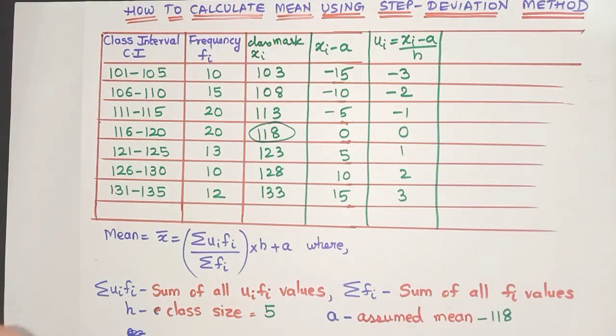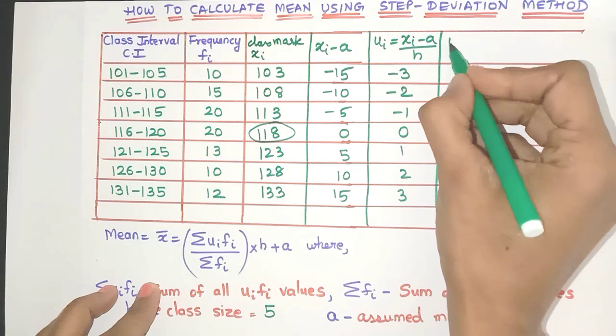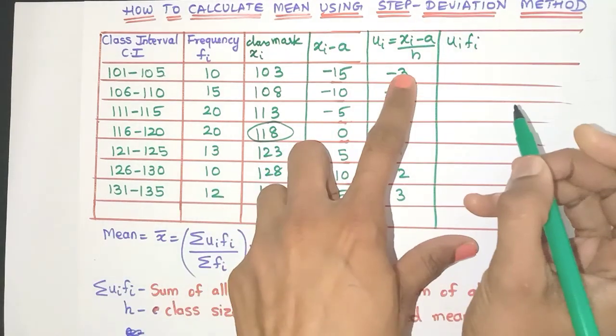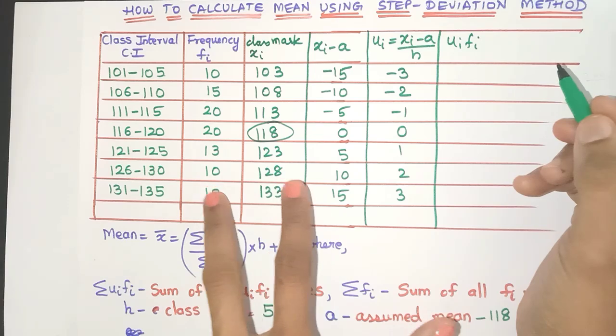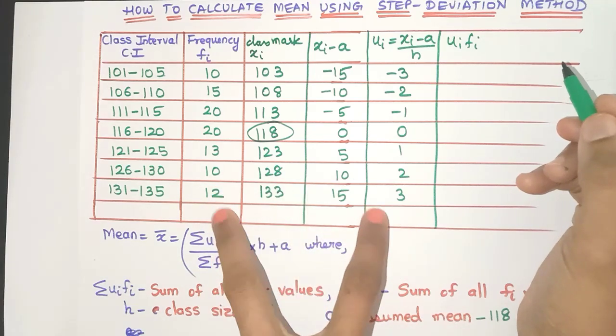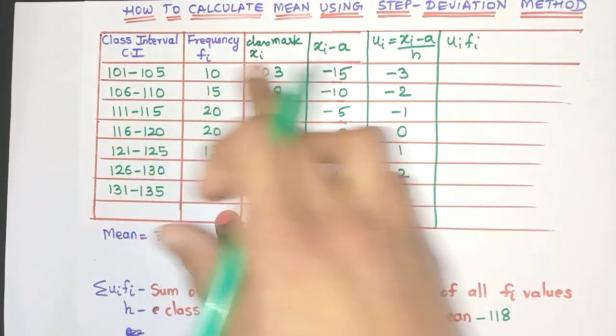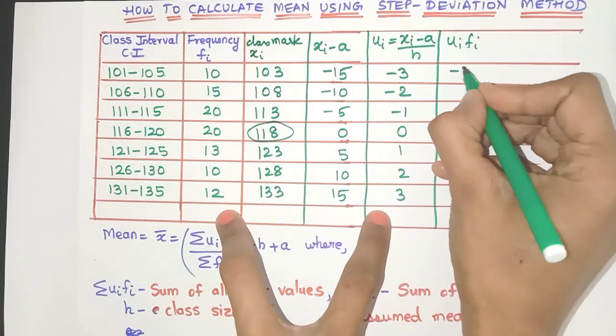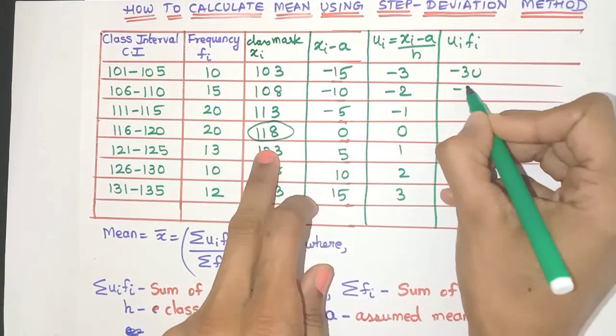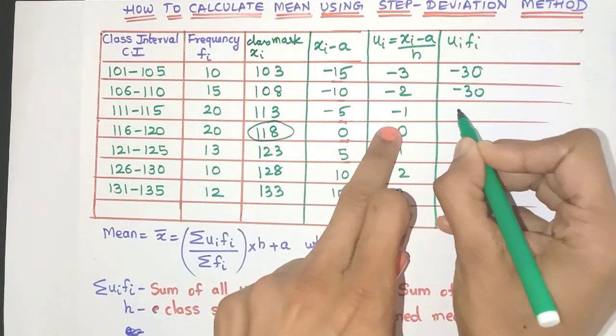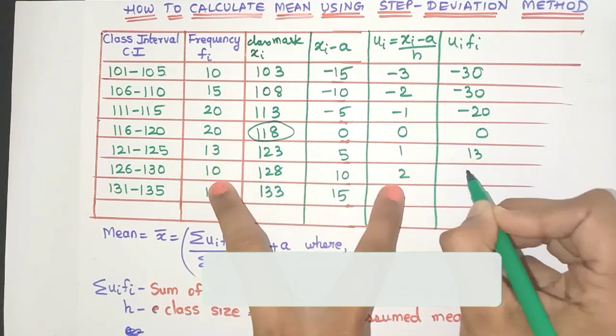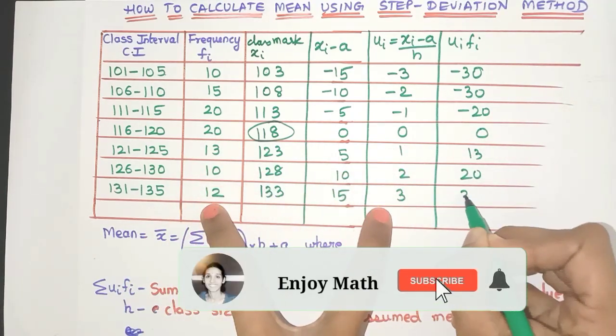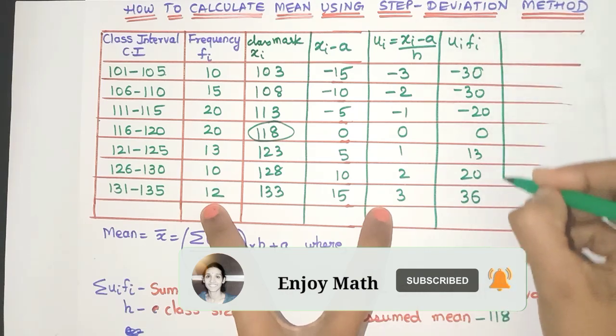So now the last column will be ui into fi, where we'll multiply ui with fi. Now because there are many columns, I would suggest you keep your fingers pointed at these two columns so that you are choosing numbers only from these columns. So you'll get 10 into minus 3, minus 30. Here you'll get again minus 30, minus 20. This is 0, 13, 20, and here it will be 36. So very carefully do the calculations.